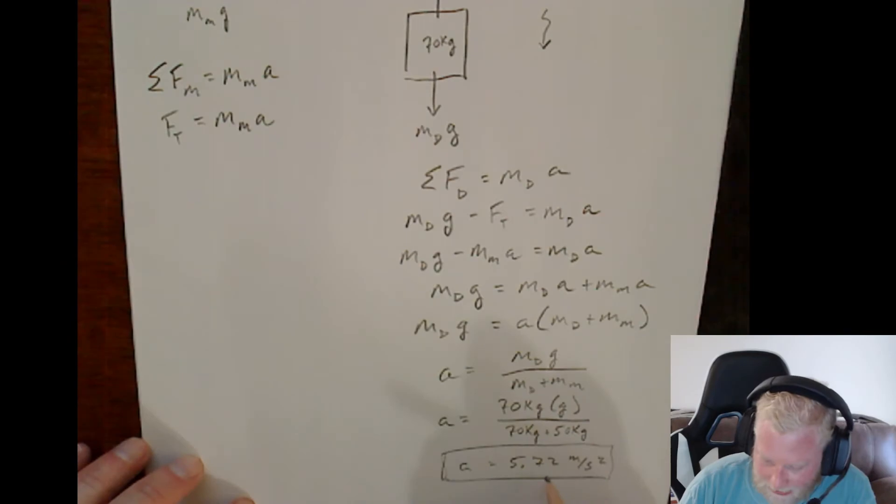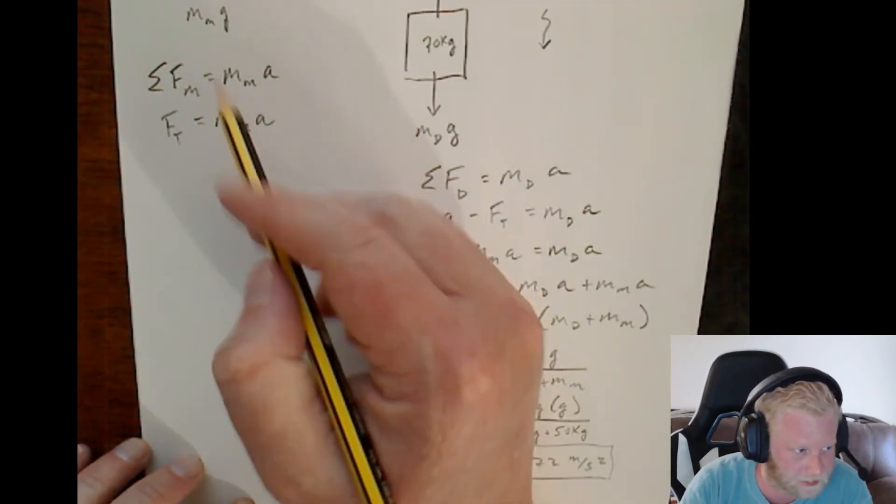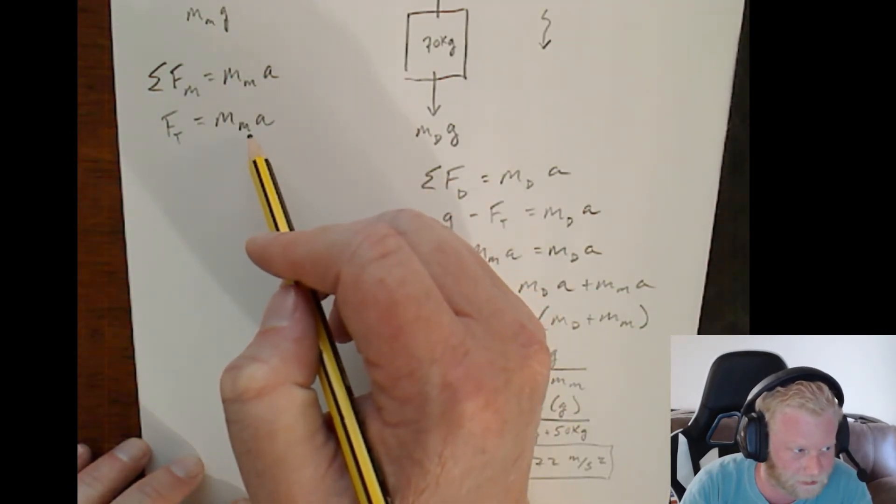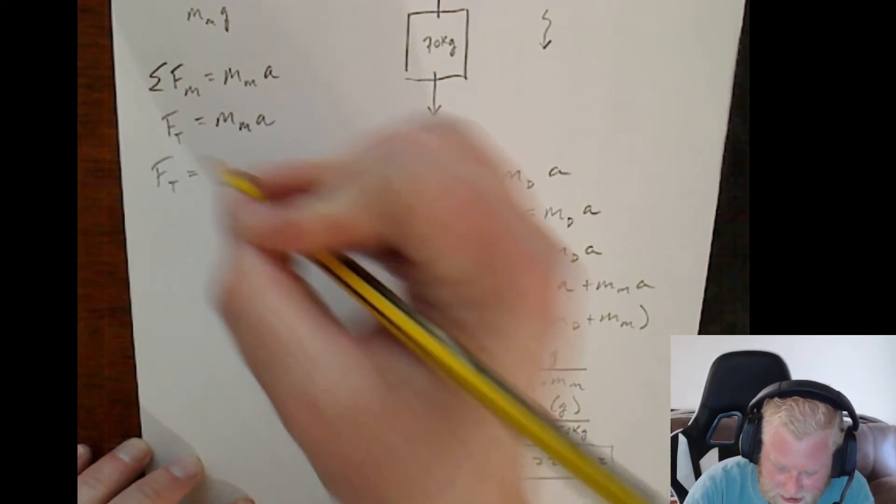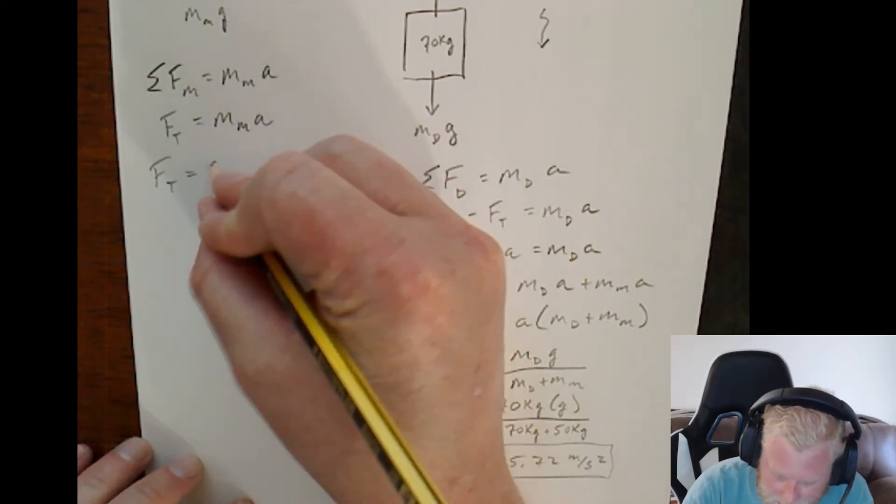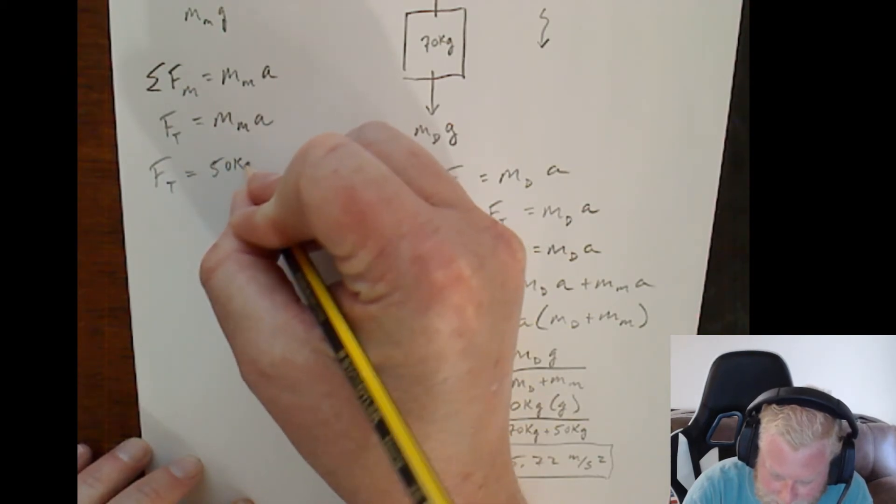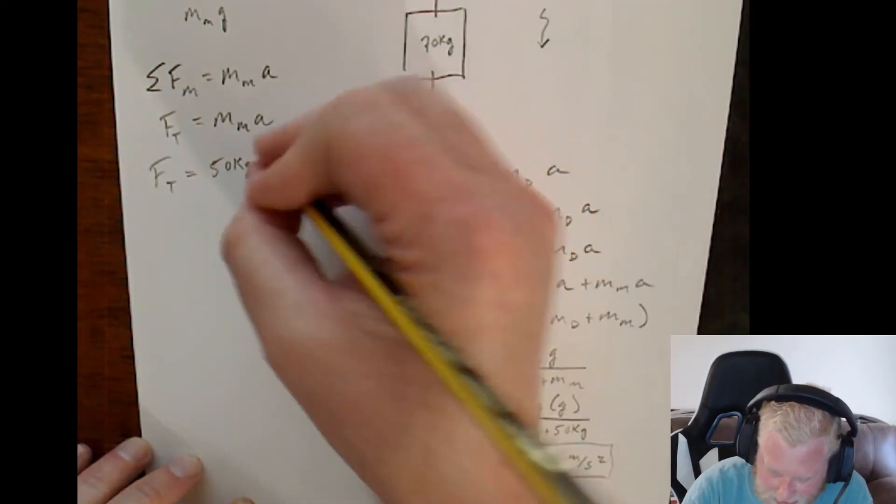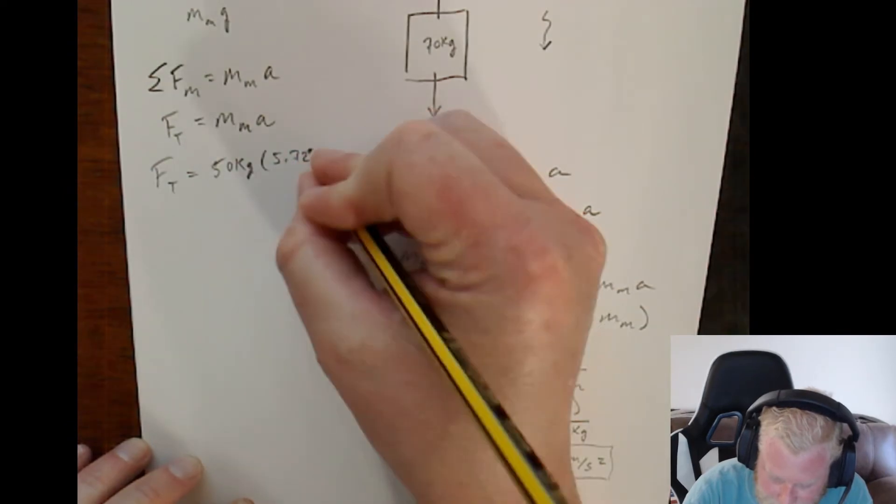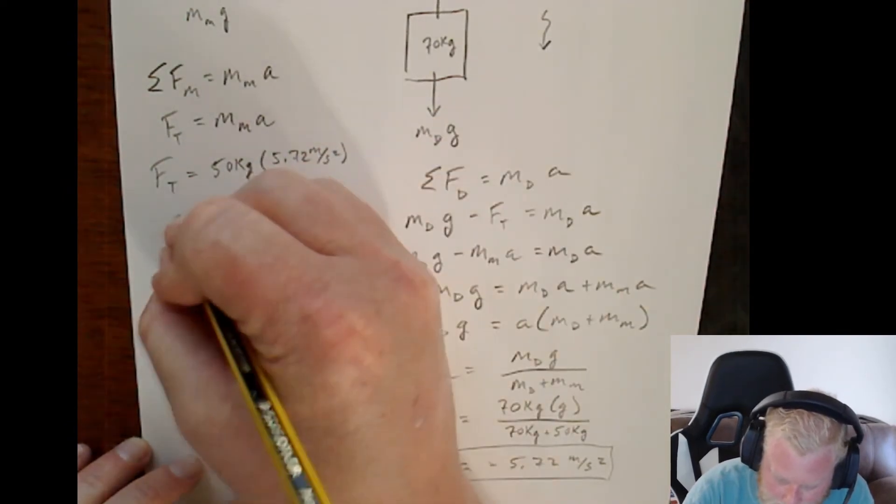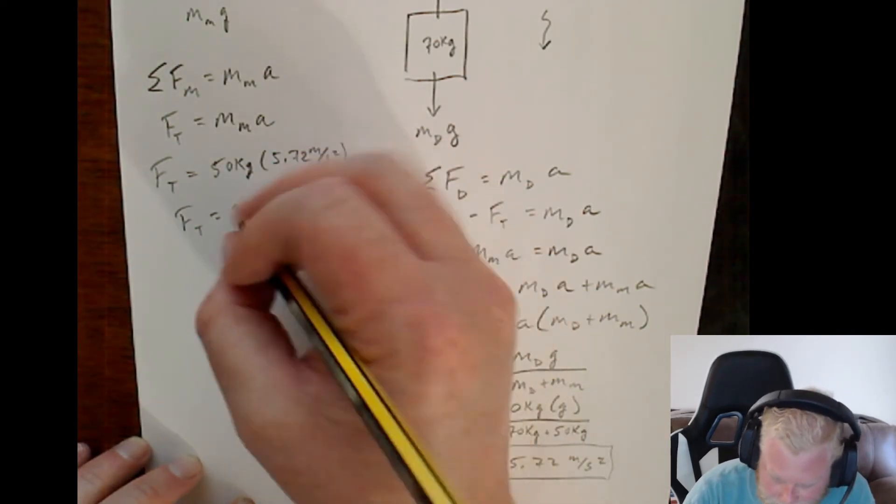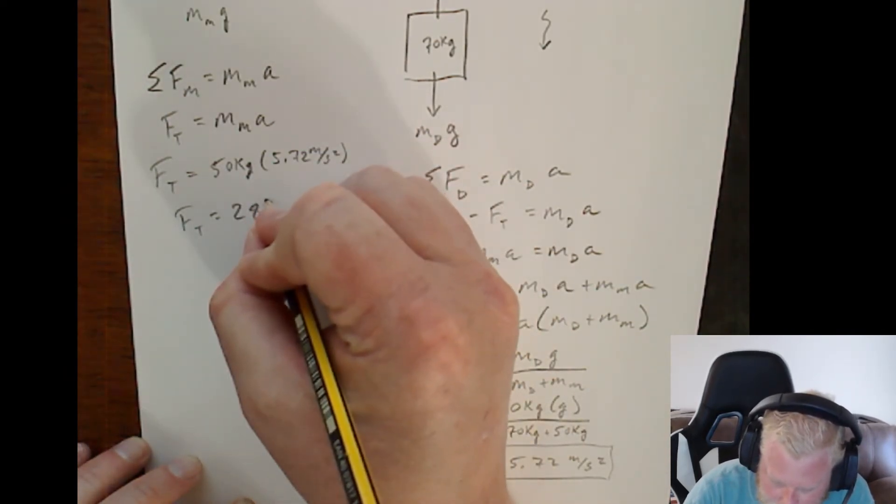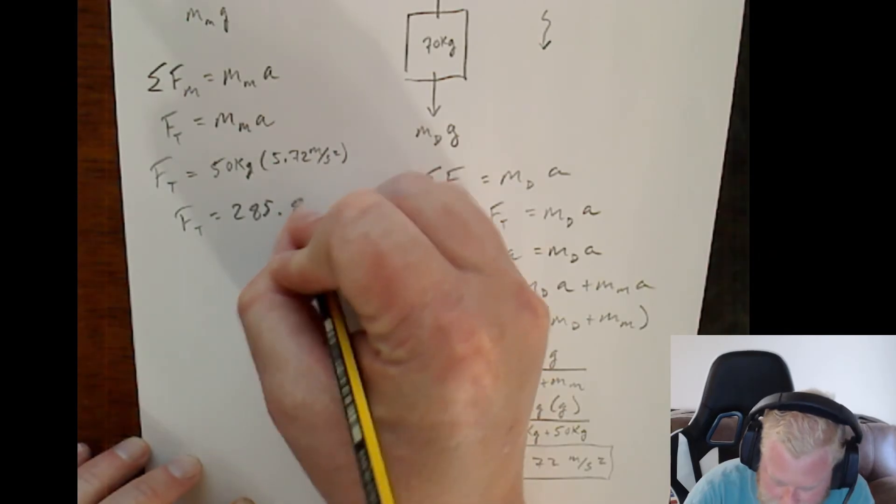Now that we have our acceleration, we can come back up here and solve out for our tension force. Because that tension force is shared between Don and Mary. So, 50 kilograms times 5.72 meters per second squared. And we get a tension force of 285.8 newtons.